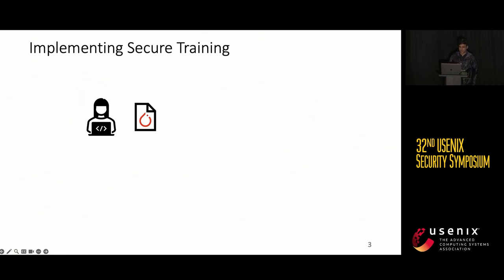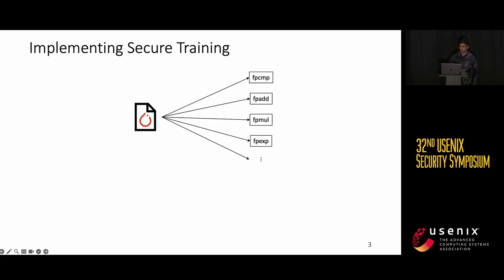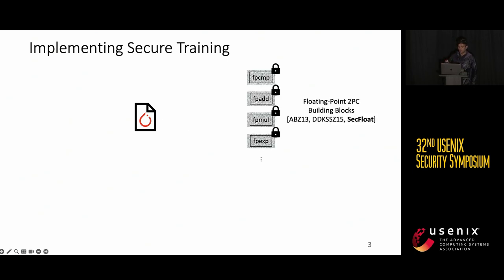Now, let's see how you actually implement it in practice. The providers in our previous example will hire some ML practitioner, and this practitioner will give us some PyTorch code. Given this PyTorch code, we know that it will eventually reduce to some floating-point operations like comparison, addition, etc. And for all of these operations, we already have the corresponding two PC protocols from prior work. In this space, SecFloat is state of the art. Given these floating-point two PC building blocks, we can put them together and get a secure version of our training script.